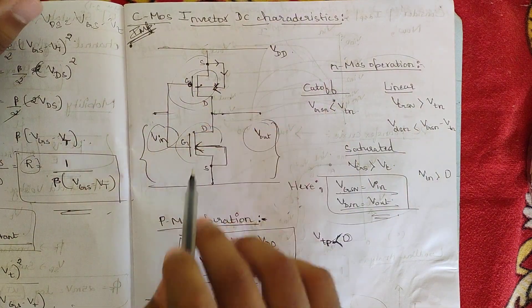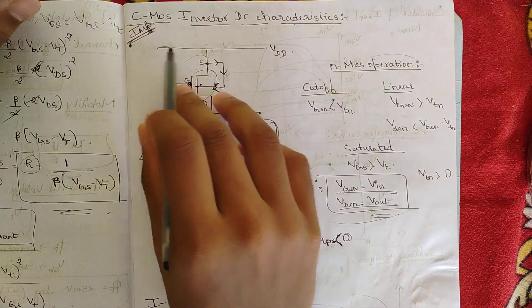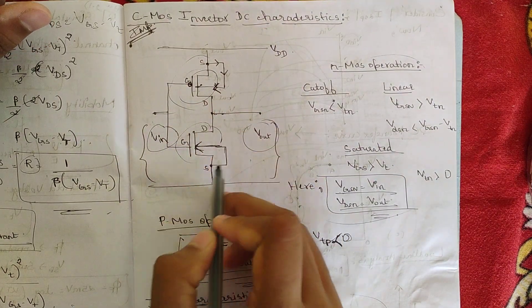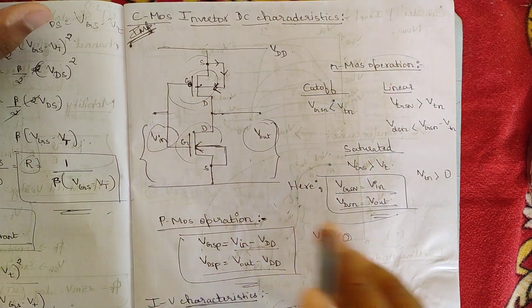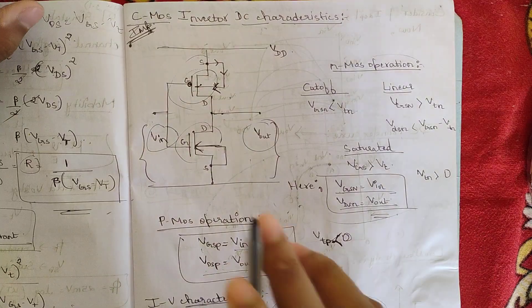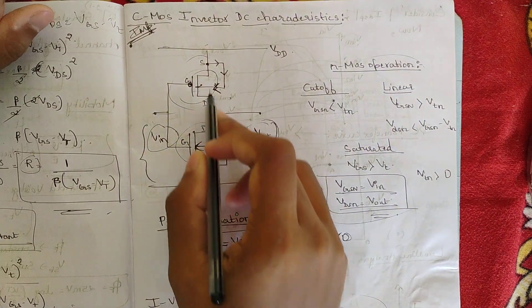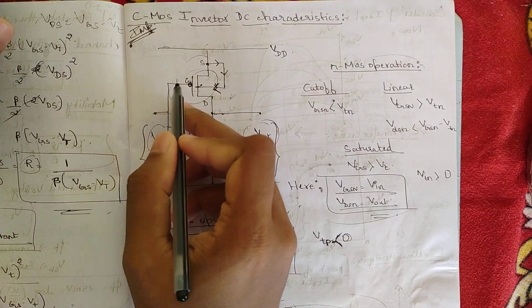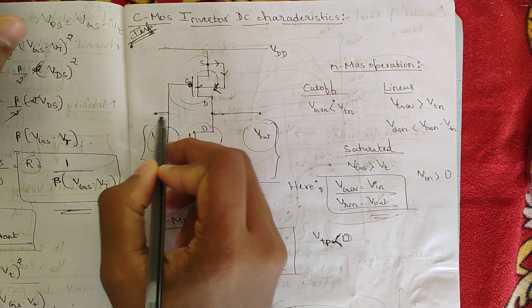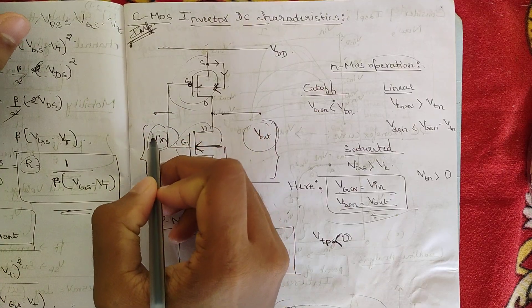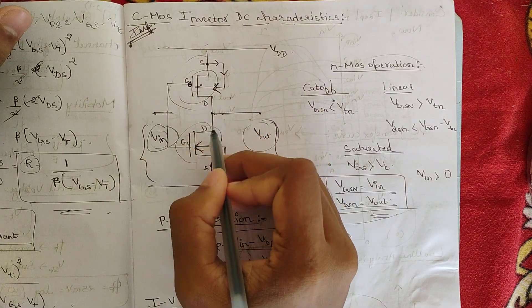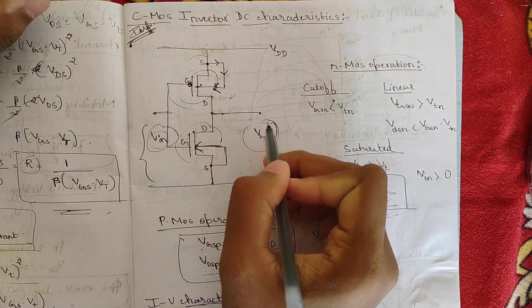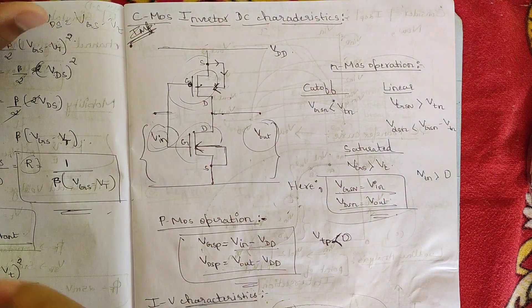I have considered the simple inverter here with VDD and ground — one PMOS transistor and one NMOS transistor. The inverter is constructed with PMOS and NMOS connected in series. Both gate terminals are shorted, with one common input VIN. Both drain terminals are shorted, giving one common output VOUT.